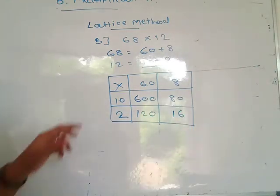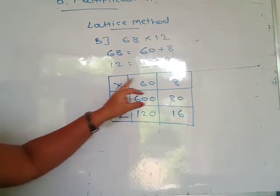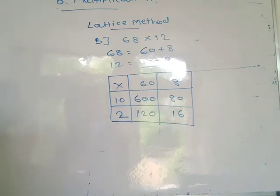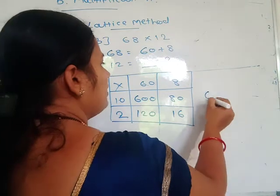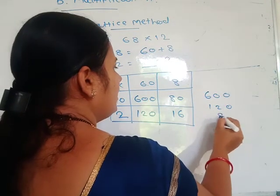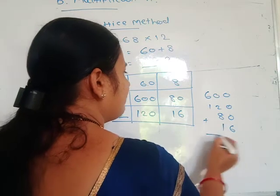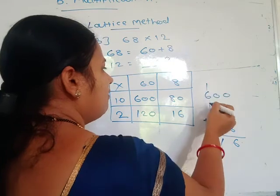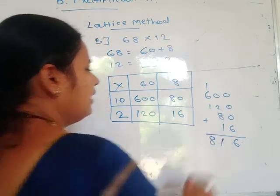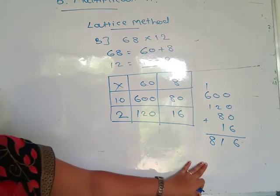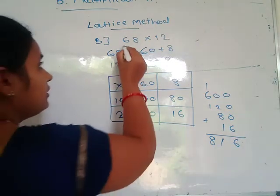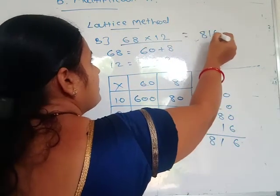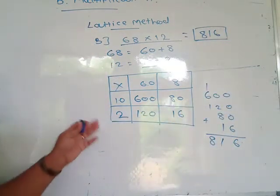See here: 10 into 60 is 600, 10 into 8 is 80, 2 into 60 is 120, and 2 into 8 is 16. Then you write the addition of all these numbers: 600 plus 120 plus 80 plus 16. Adding: 6, then 8 plus 1 is 9, carry 1 — 7 plus 1 is 8. The answer is 816. So 68 into 12 is equal to 816, using this lattice method.